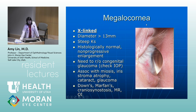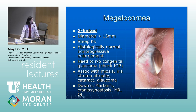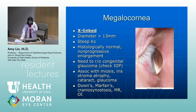As opposed to megalocornea, which is X-linked — the diameter in megalocornea is greater than 13 millimeters. There are very steep K values and you can tell it's a very large, very steep cornea. It's histologically normal and not a progressive enlargement. One needs to distinguish megalocornea from congenital glaucoma, especially in a young patient, so checking IOP would be the distinguishing factor. Megalocornea is relatively clear, so you don't get the corneal clouding sometimes seen with congenital glaucoma. It's associated with miosis, iris stroma atrophy, cataract, and glaucoma, and also with Down syndrome, Marfan syndrome, craniosynostosis, mental retardation, and osteogenesis imperfecta.